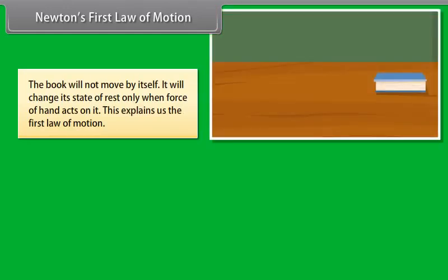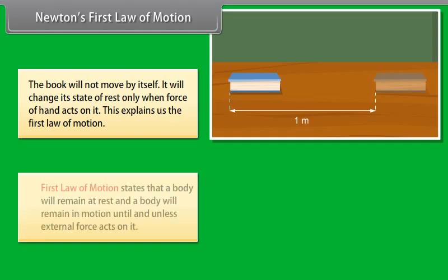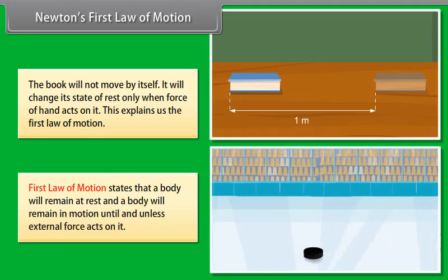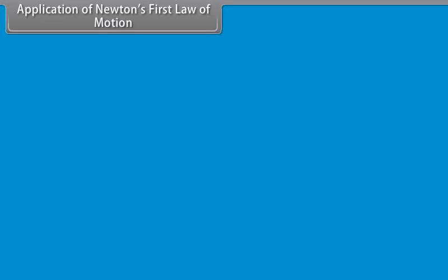The book will not move by itself. It will change its state of rest only when force of hand acts on it. This explains the first law of motion. First law of motion states that a body will remain at rest and a body will remain in motion until and unless external force acts on it.